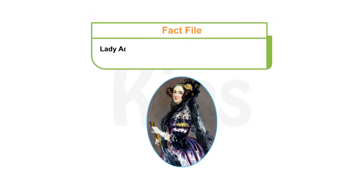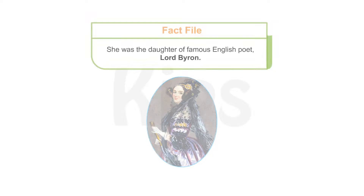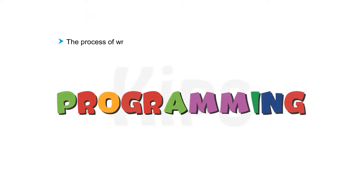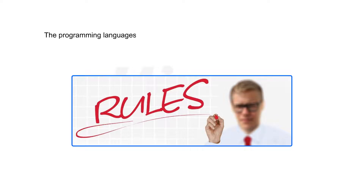Let's know a fact: Lady Ada Lovelace, a mathematician, is regarded as the first computer programmer. She was the daughter of famous English poet Lord Byron. The process of writing specific instructions in a computer language is called programming. Each programming language has its own specific rules. Programming languages have developed considerably due to the ease and ability of programmers to write powerful application programs.